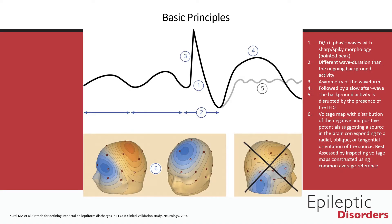Before we go over some examples of interictal epileptiform discharges, we will discuss some basic principles. This diagram goes over six criteria proposed by the IFCN, which, when met, have a reasonable sensitivity and specificity to characterize a particular waveform as an epileptiform discharge. As we go through each criterion, we will refer back to this sample drawing of a typical discharge and highlight where each criterion would be met.